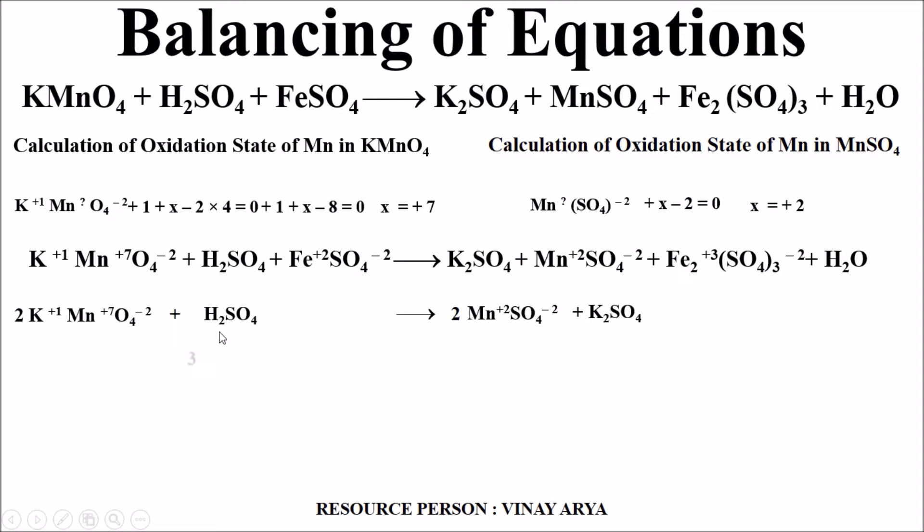Now, sulfates are 3 in the product side, that is 2 MnSO4 molecules and 1 potassium sulfate molecule. So overall sulfates are 3 ions. Now for that we are writing 3 H2SO4 and this reaction has equal number of sulfate ions on both sides. As soon as we have added sulfuric acid, in the product side we have to form water and this also will be 3 molecules.